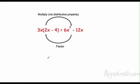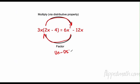We know that 3x times 2x is 6x squared, and 3x times negative 4 is negative 12x. Going this direction is multiplying — also known as the distributive property. Going backwards is called factoring. I'll even call it 'undistributing,' which makes sense because I'm reversing the distributive property.